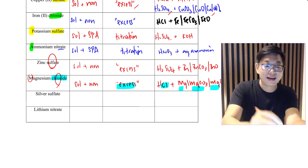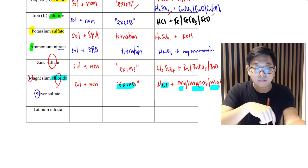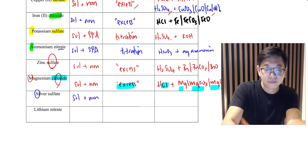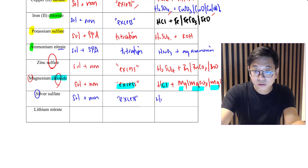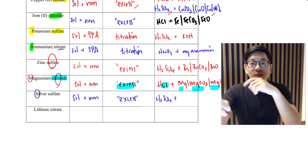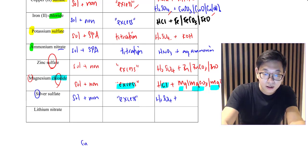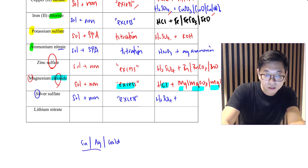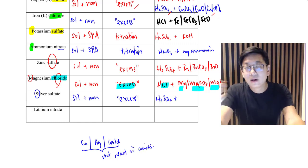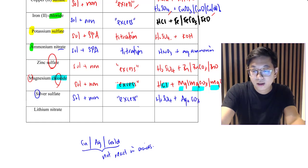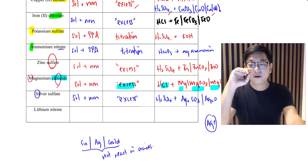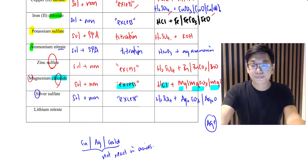For silver sulfate — careful, silver starts with S but is not SPA. The S in SPA stands for sodium. Silver sulfate is soluble and non-SPA, so we use the excess method with sulfuric acid (H₂SO₄). Silver metal will not work because it is unreactive — copper, silver, and gold will not react with acids. We use silver carbonate (Ag₂CO₃) or silver oxide (Ag₂O). Silver is an Ag⁺ ion, hence those formulas.